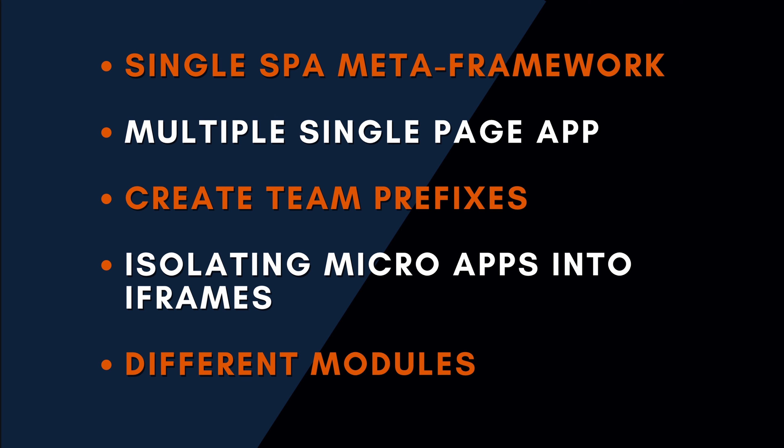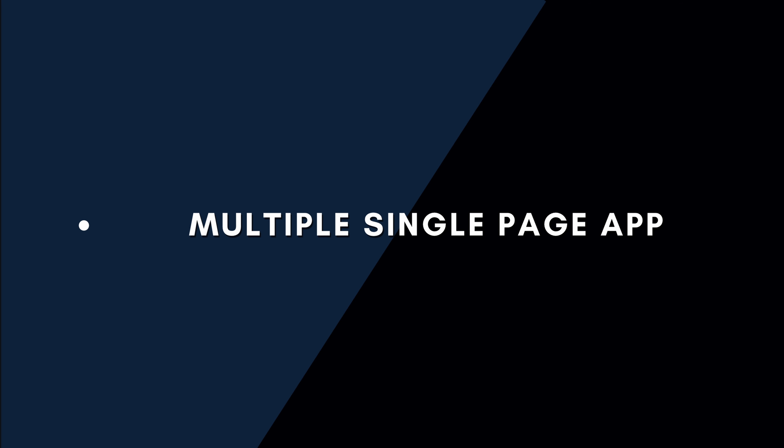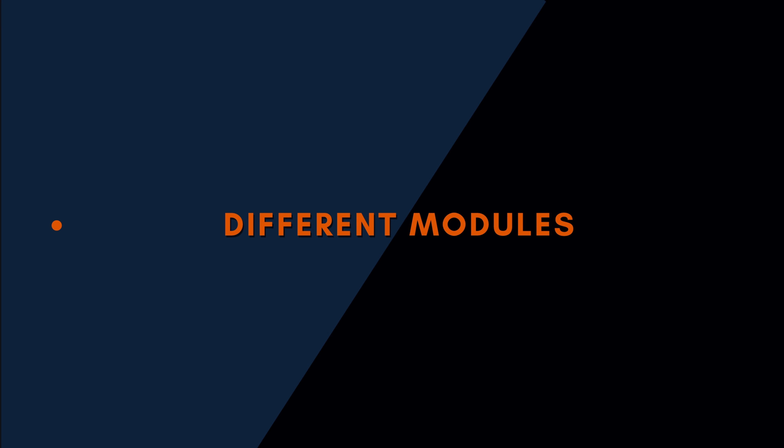Now let's look at the best practices of microservices — I would name five: single SPA meta frameworks, multiple single-page apps, team prefixes, isolating micro apps into iframes, and different modules. Single SPA meta frameworks combine multiple frameworks on the same page without refreshing, such as React, Vue, Angular, and so forth. Multiple single-page applications live at different URLs; for shared functionalities, applications use npm or browser components. Isolating micro apps into iframes uses the Window postMessage API and libraries to coordinate, and iframes share APIs exposed by their parent window. Different modules communicate over a shared event bus, with each module working on its own framework as long as it handles incoming and outgoing events.